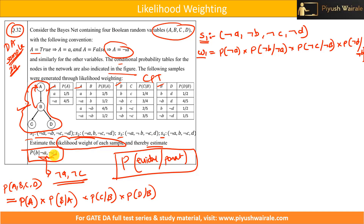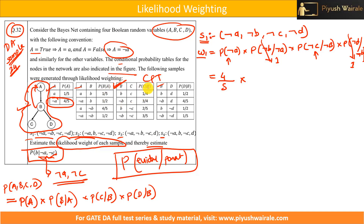Evidence is negation of A and negation of C, so I have to consider those two probabilities only. Because negation of C given parents: negation of A is independent. So for the remaining probabilities we set them equal to one. Now, probability of negation of A is 4/5, multiplied by probability of negation of C given negation of B — using the CPT table, that is 3/5. That gives 12/25, which is 0.48. So the weight for sample S1 is 0.48.